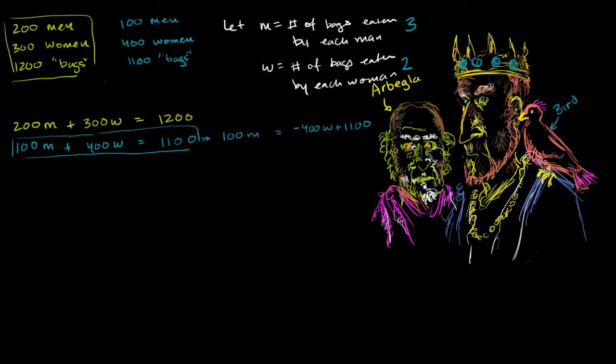And if we want to solve for m, we just divide both sides by 100. So we just divide all of the terms by 100. And then we get m is equal to negative 400 divided by 100 is negative 4w plus 11. So now we've constrained m in terms of w. This is what the bird is saying using the king as his translator.